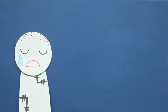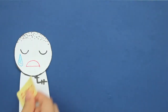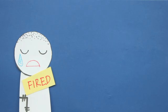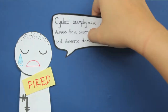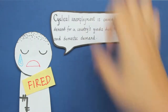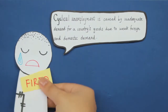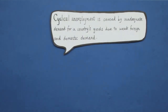Remember Bob? He got fired due to an economic recession. This is a form of cyclical unemployment, which is caused by the inadequate demand for a country's goods due to weak foreign and domestic demand.